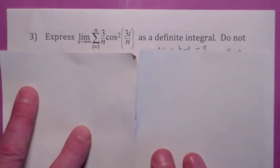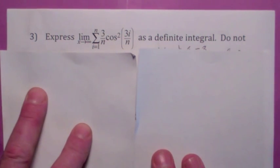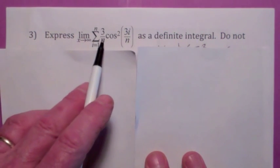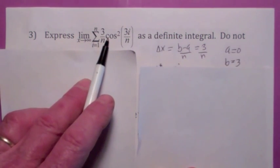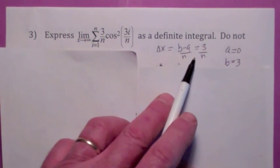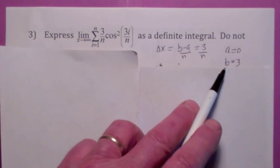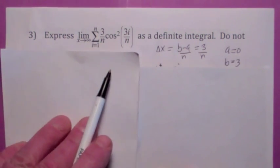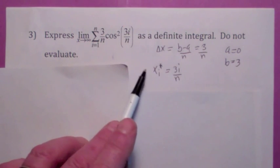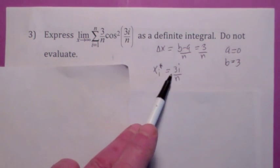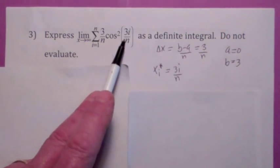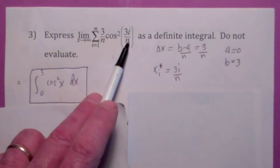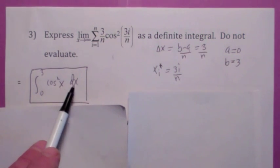Let's go backwards now. I'm giving you the limit of the Riemann sum and I want you to express this as a definite integral. Delta x is b minus a over n, which looks like 3 over n, so a is 0 and b is 3. x sub i star is always a plus i delta x, so it becomes 0 plus 3 over n times i. So the integral would be the integral from 0 to 3 of cosine squared of x dx.